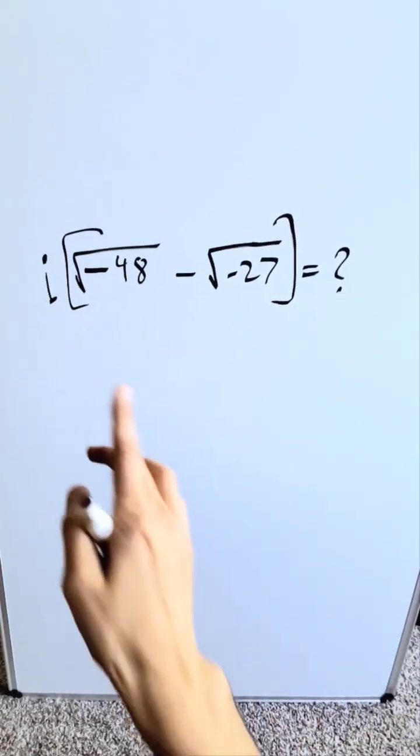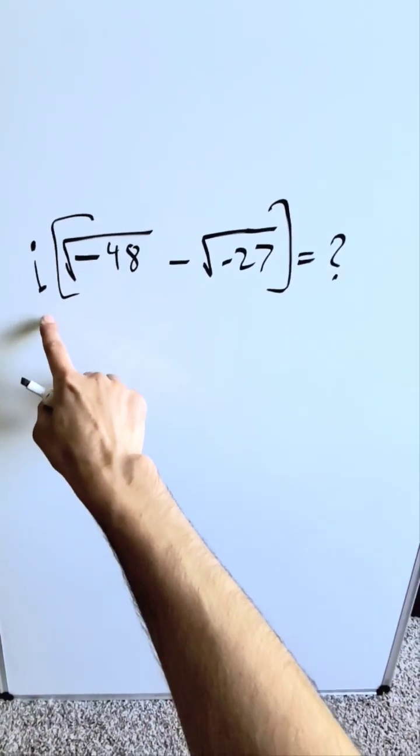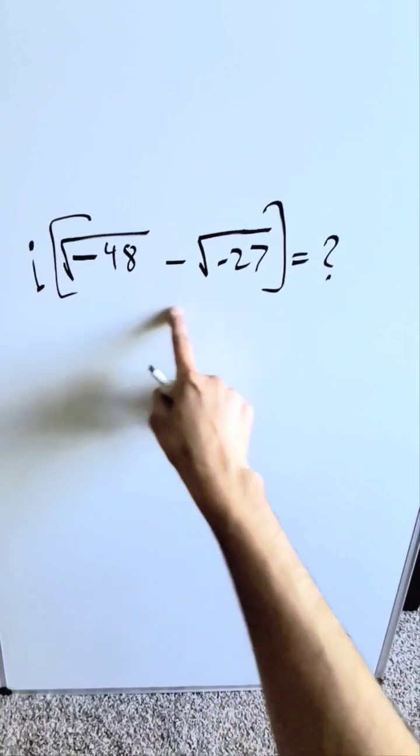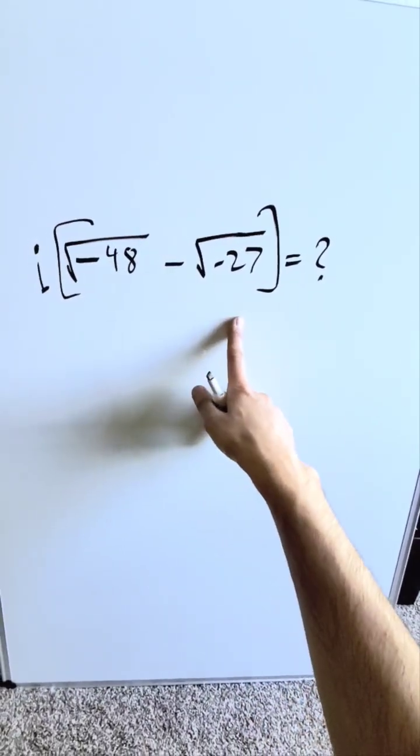This here is an interesting question. An i sitting outside, imaginary number i, in the parentheses, square root minus 48 minus square root minus 27.